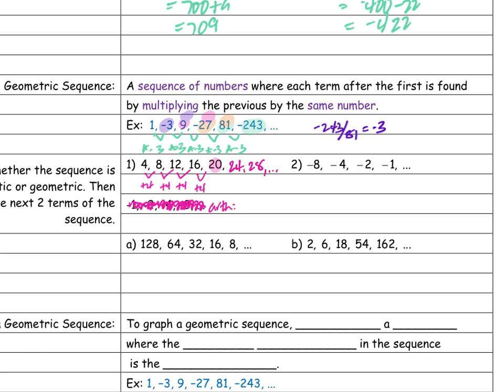Now we're going to do the next one — same thing. Am I multiplying the same number or adding the same number? The difference between the first and second term is 1, and between second and third is 4, so obviously I'm not adding the same number. Let's see if I'm multiplying the same number.